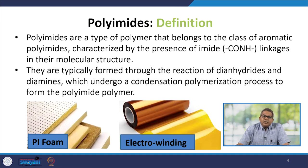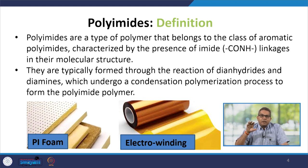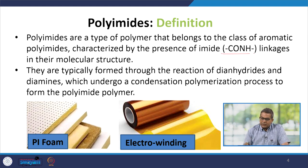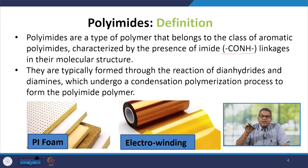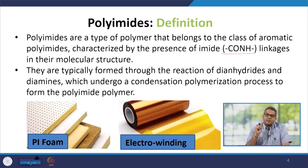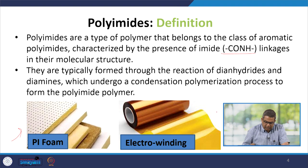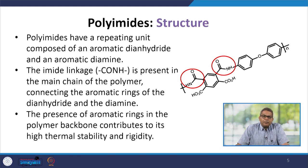Polyimides are a type of polymer belonging to the class of aromatic polymers, characterized by the presence of imide linkage — usually represented as CO-NH — in their molecular structure. They are typically formed through the reaction of dianhydrides and diamines, which undergo condensation polymerization to form a polyimide polymer. Examples include polyimide foams and electro-winding applications.